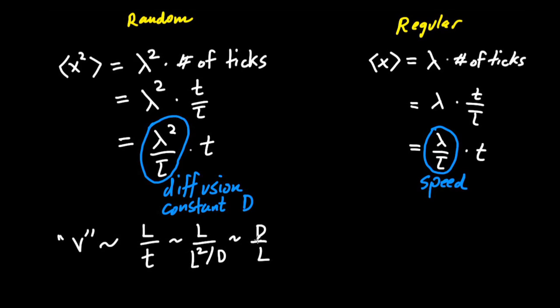Again, we see the fundamental difference between a regular and a random walk. A regular walk has a constant speed here of lambda over tau, as long as lambda and tau don't change. In contrast, in a random walk, the speed is inversely proportional to the gap l.